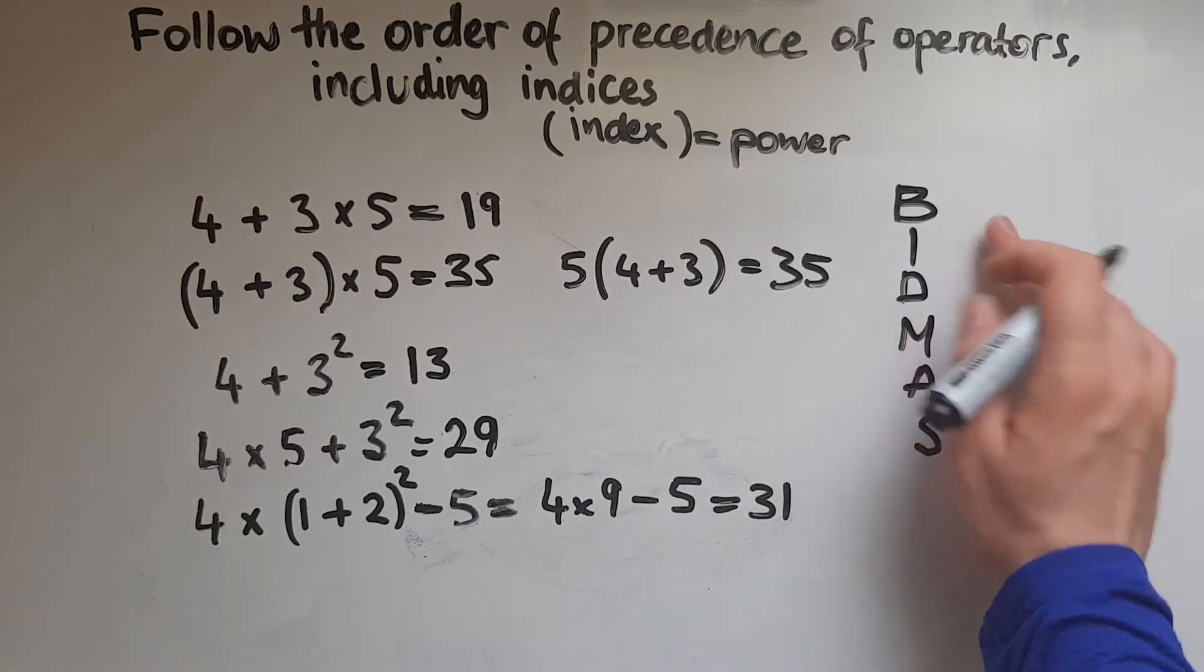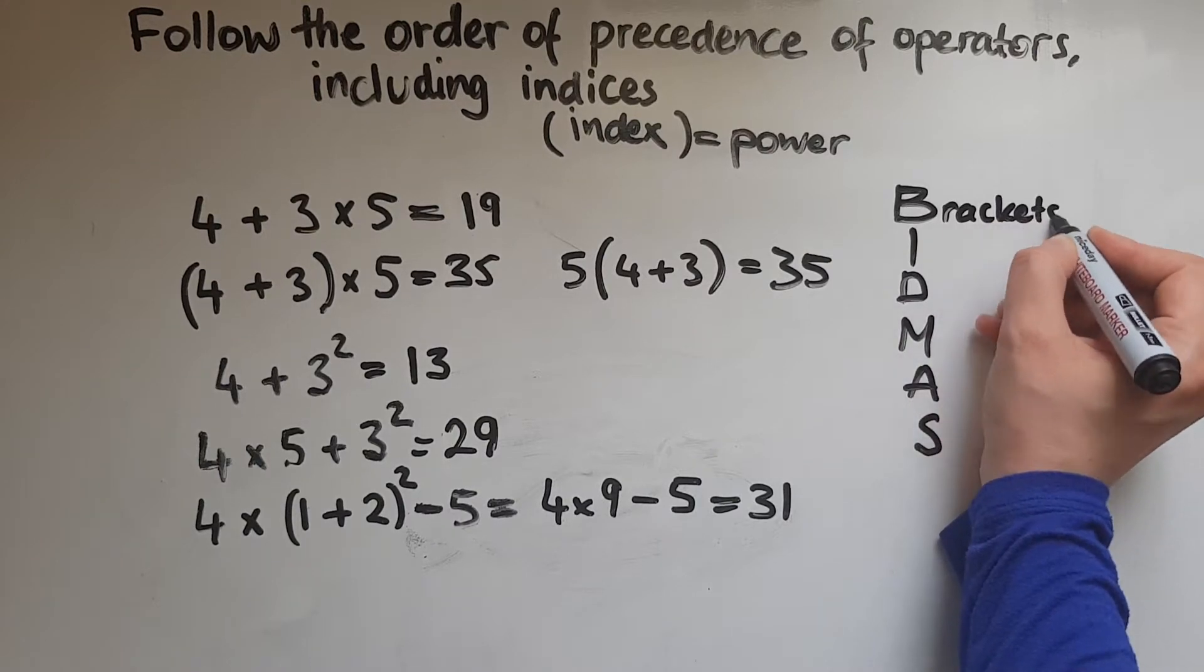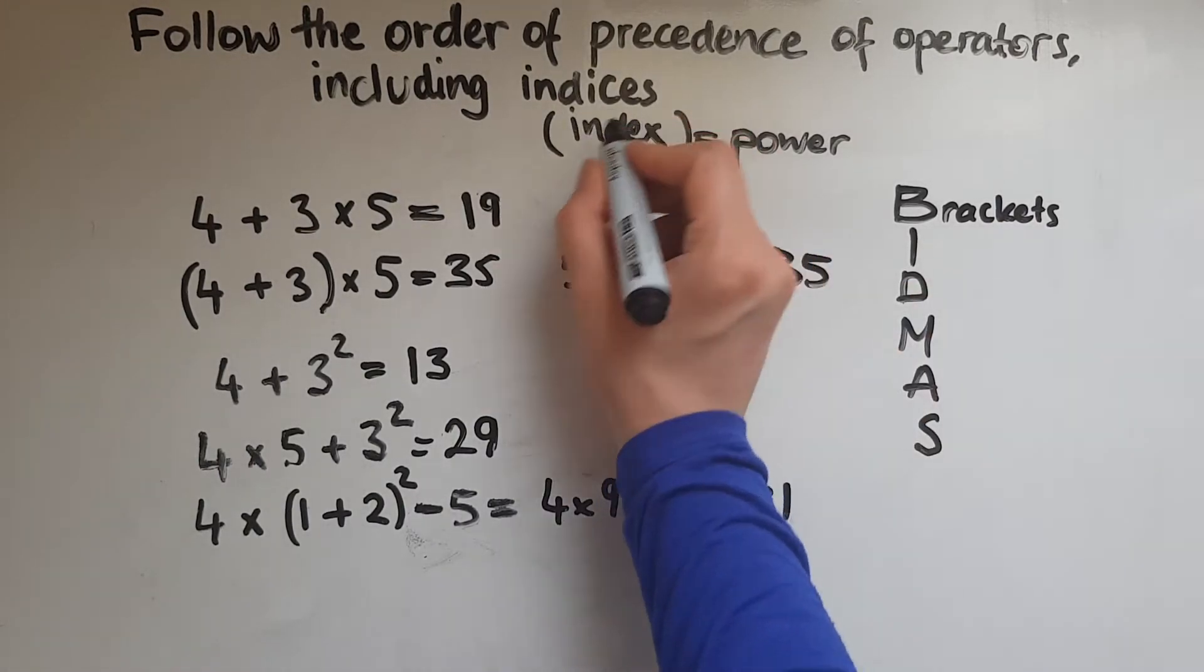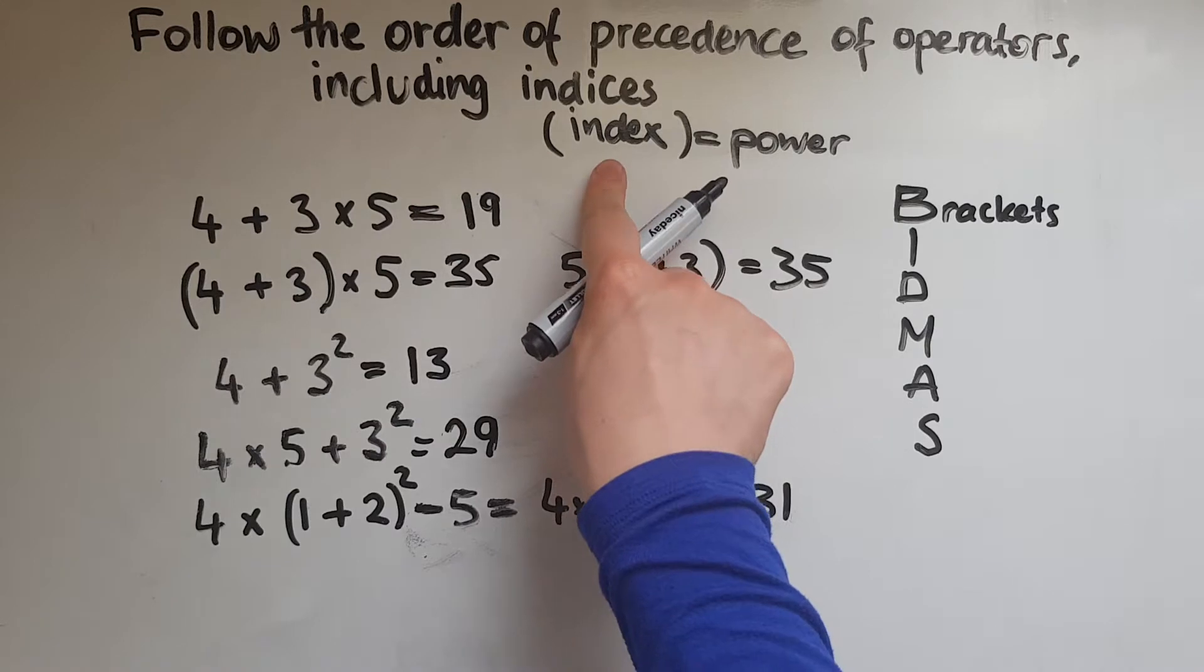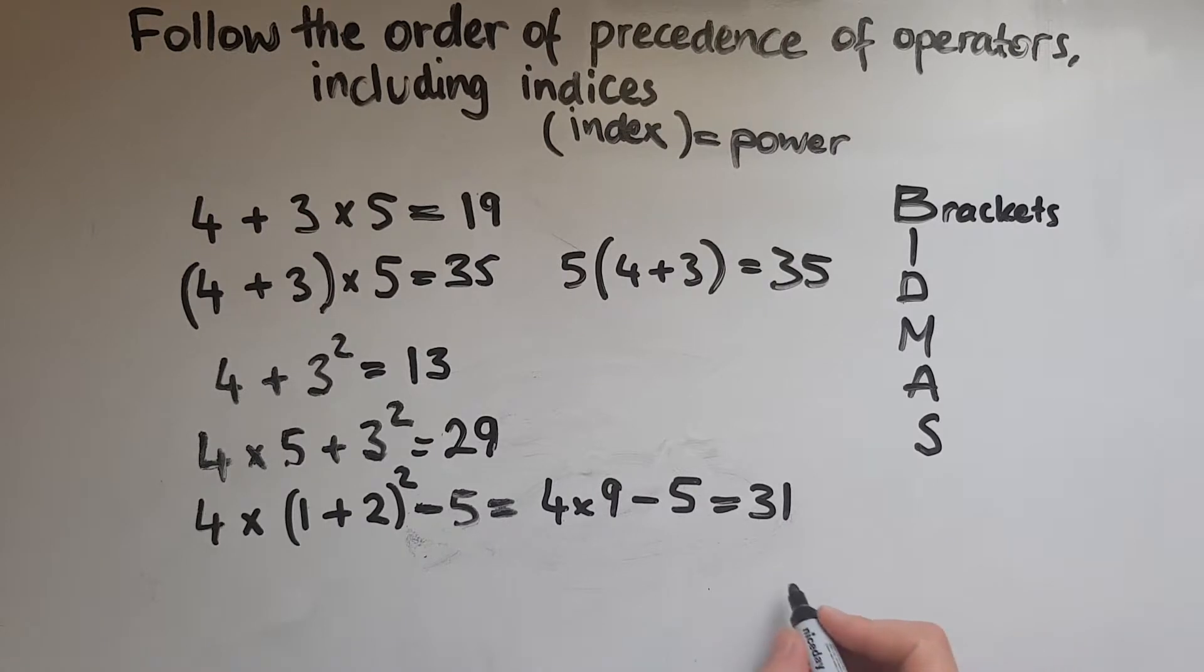B stands for brackets. I stands for indices. Indices are the powers that we have here. It could be 3 to the power of 3, 4 to the power of 3, 10 to the power of 5.